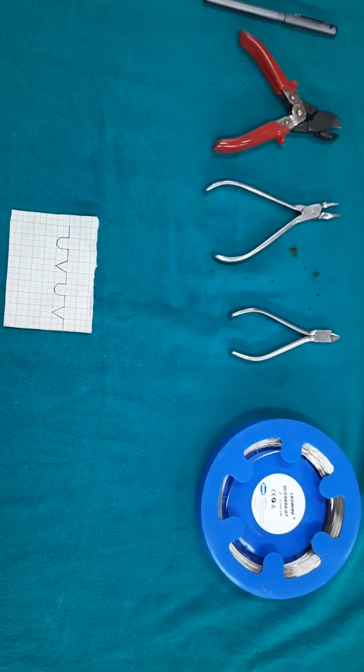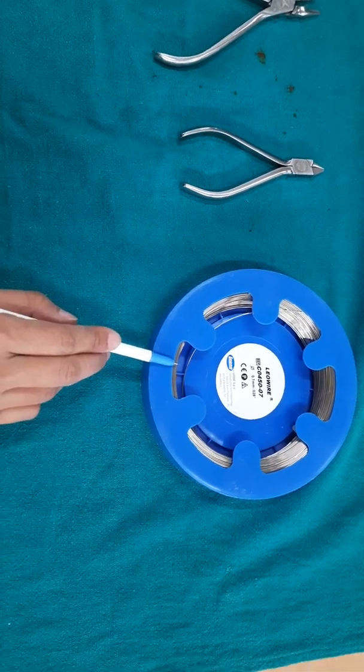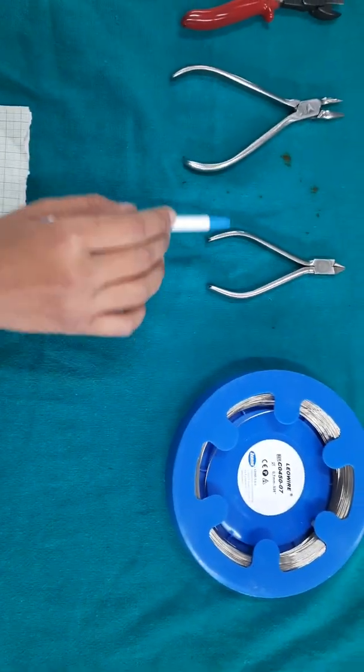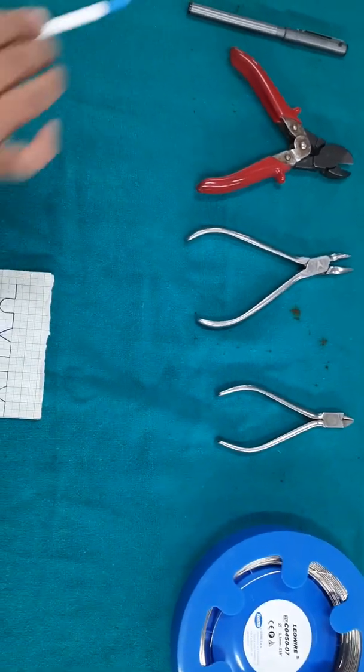The armamentarium required are orthodontic stainless steel wire 0.7 mm, add-ons plier, universal plier, a wire cutter, marker, and a graph paper.